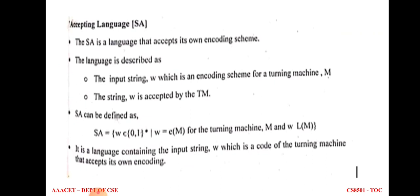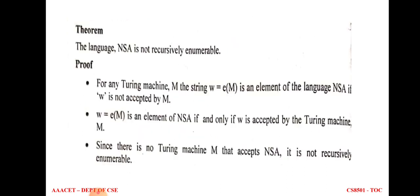Self accepting language SA is a language that accepts its own encoding scheme. For a Turing machine which accepts the input string W that belongs to the particular language, that type of language is called self accepting language. SA is equal to W belonging to {0,1}* for Turing machine M, where W belongs to L(M). It is the language containing the input string W which is the code of the Turing machine that accepts its own encoding. For SA, the Turing machine accepts the input string which belongs to the language; for NSA, it does not accept the input string which does not belong to the language.